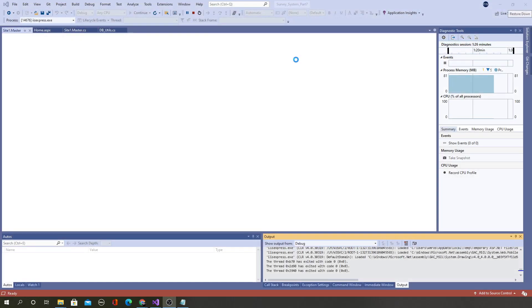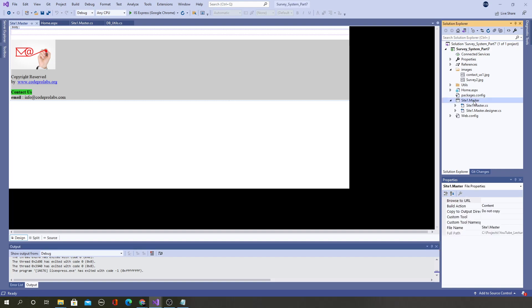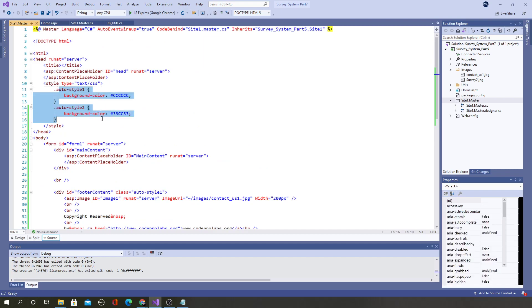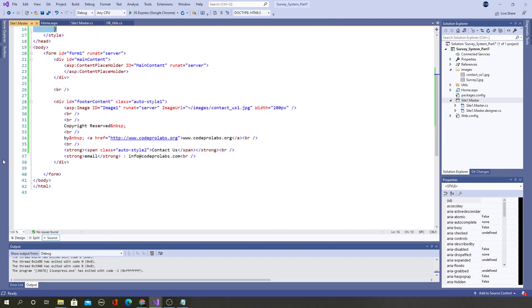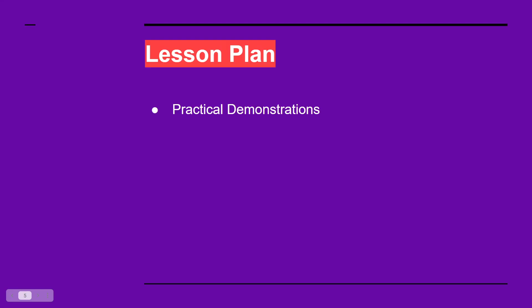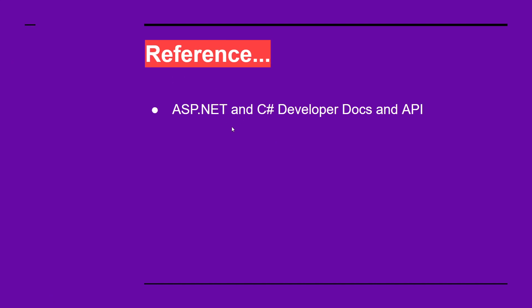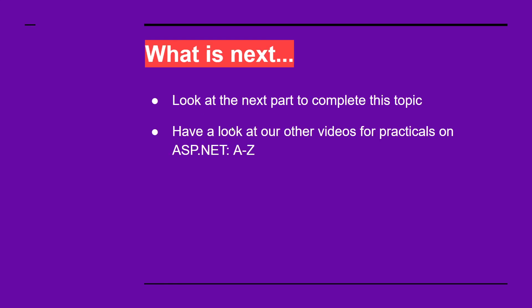In the site master source you can see styles have been applied automatically — we will talk about that further. We completed the practical demonstration: you learned about the master page and creating the home page. We'll be using the listed references for this lecture. Make sure to look at the next part to complete this full survey system app, and see how real-world developers create a complete application. We are very excited to see you in the next part!